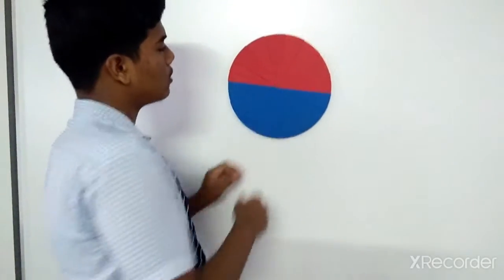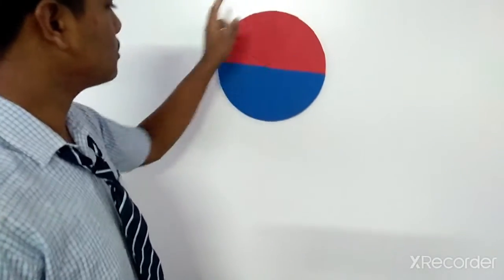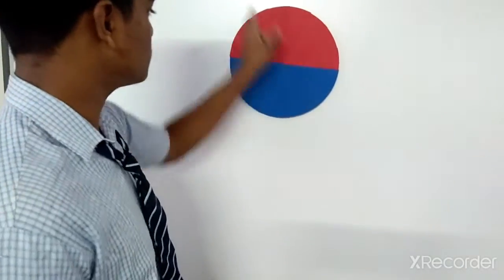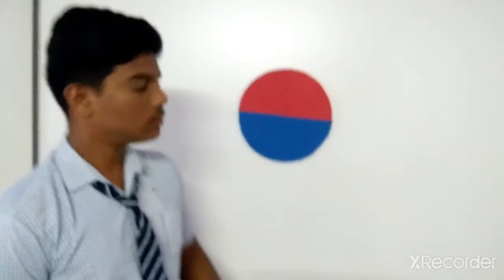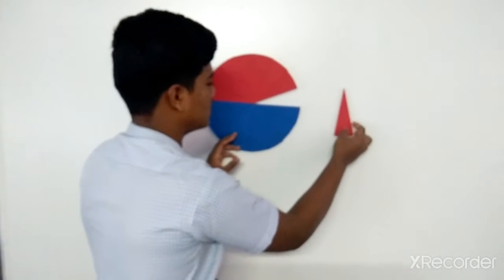Now I will cut this circle through the center like this, taking the cutouts and arrange like this.